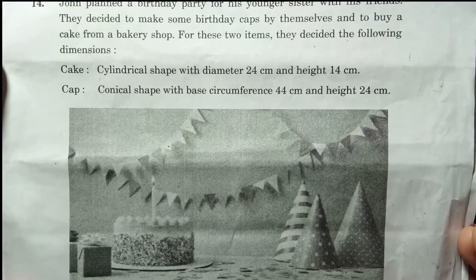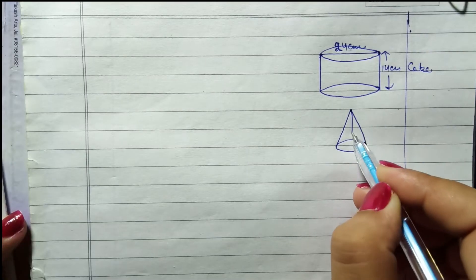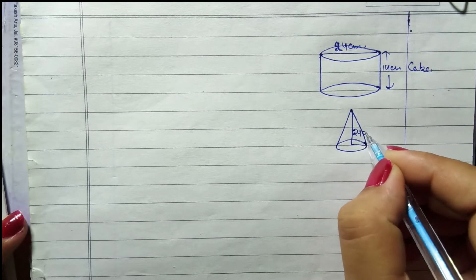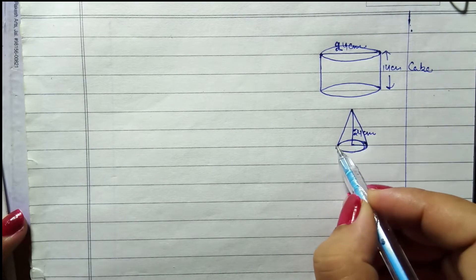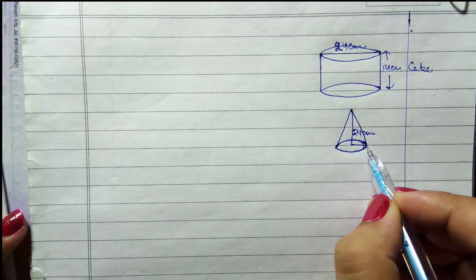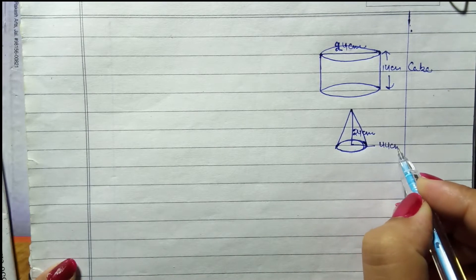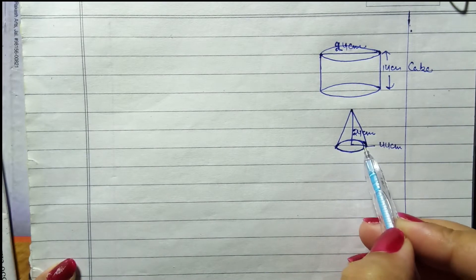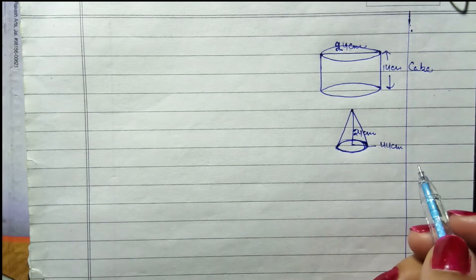Iska diagram bhi hum bana lete hain. Cap kuch is tarah ki hai jiski height 24 cm hai, aur circumference yeh wali jo boundary hai, yeh 44 cm hai. Radius nahi hai.